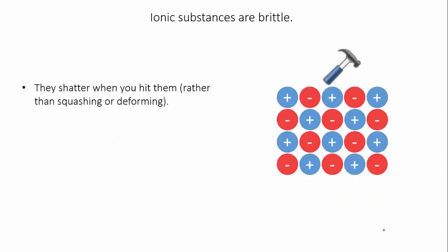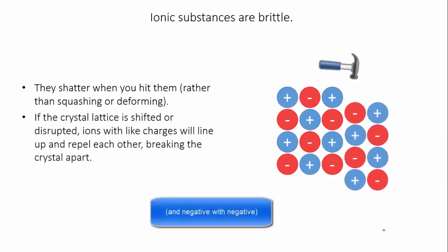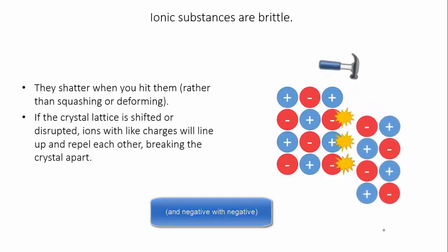Ionic substances are brittle, which means that when you hit them they shatter rather than squashing. This is because if the crystal lattice shifts or is disrupted, positive ions will line up with positive ions which repel each other, and that causes the lattice to break.